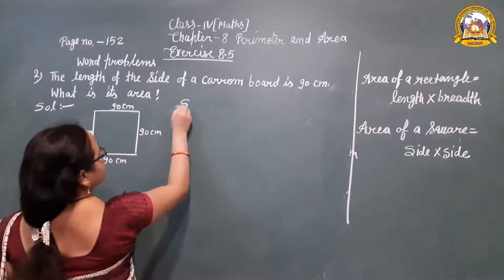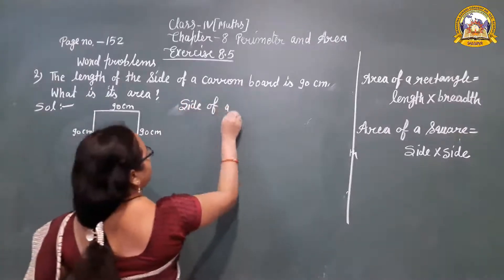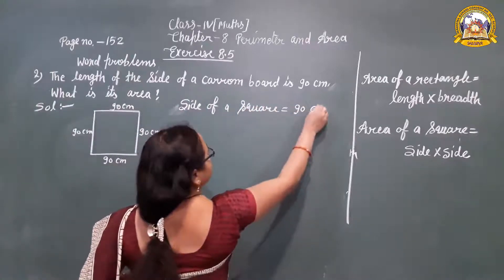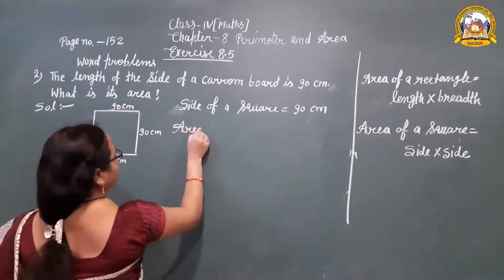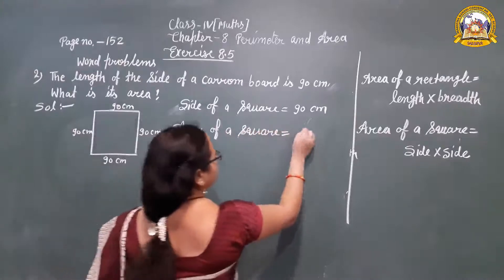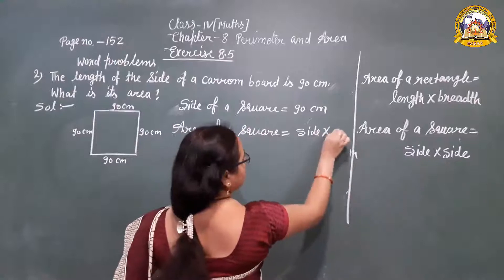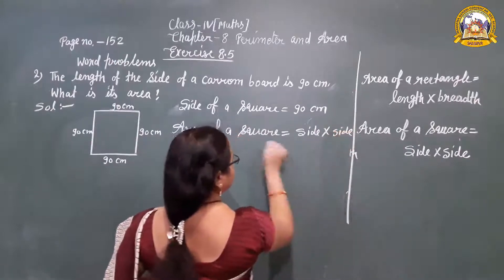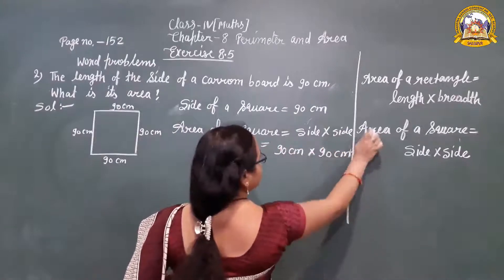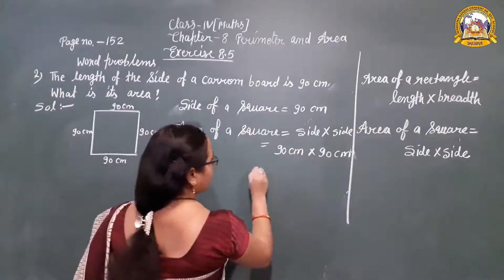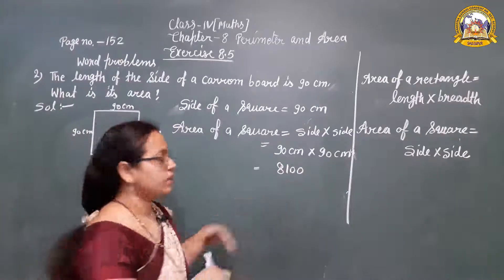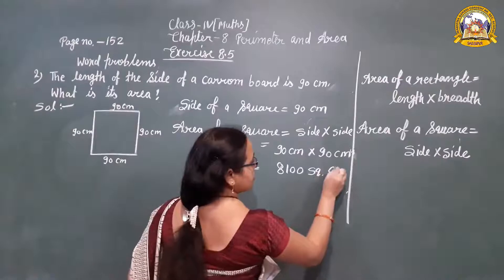The side of a square is equal to 90 centimeters. The area of a square — we apply the formula: area of a square is equal to side into side. So 90 centimeters into 90 centimeters. Multiplying both numbers gives us 8,100.